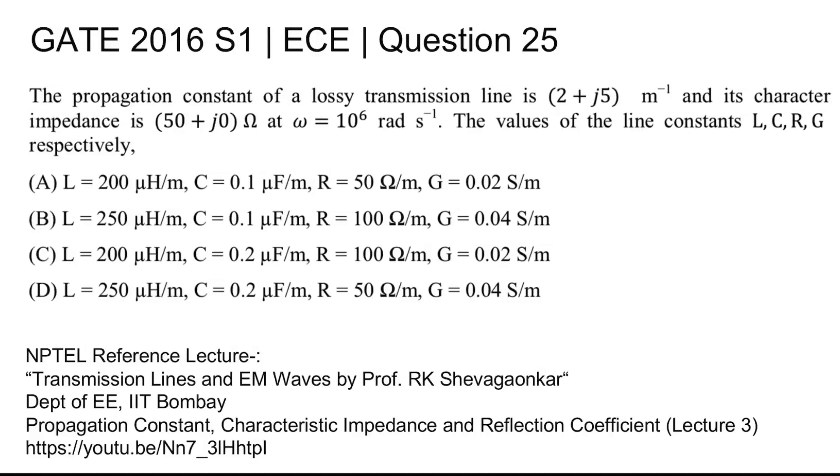GATE 2016 Set 1, ECE Question 25. The propagation constant of a lossy transmission line is 2+j5 m⁻¹ and the characteristic impedance is 50Ω at ω = 10⁶ rad/s. The values of line constants L, C, R, G respectively are being asked.